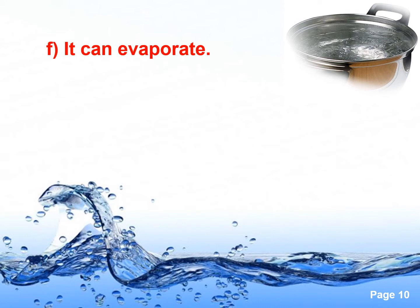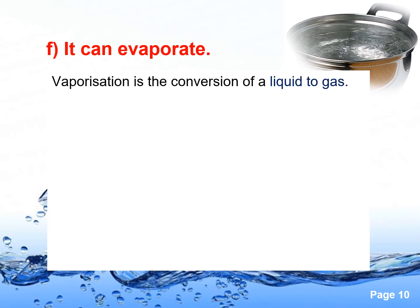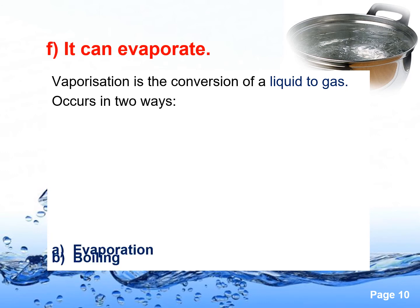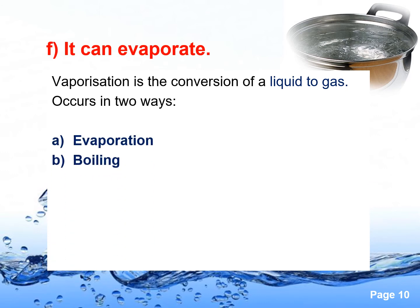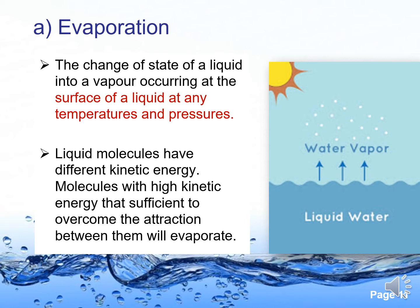Liquid can evaporate. Vaporization is the conversion of a liquid to gas, and it occurs in two ways: evaporation and boiling. Evaporation is the change of state of a liquid into a vapor occurring only at the surface of a liquid at any temperature and pressure. One of the most common real-life examples of evaporation is drying clothes under the sun. When wet clothes are put under the sun, they get heated up, resulting in the evaporation of water particles present in the wet clothes, making the clothes dry.